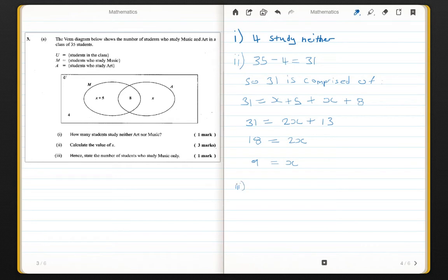The music only students are x plus 5, but we know x to be 9, so 9 plus 5 equals 14 students.